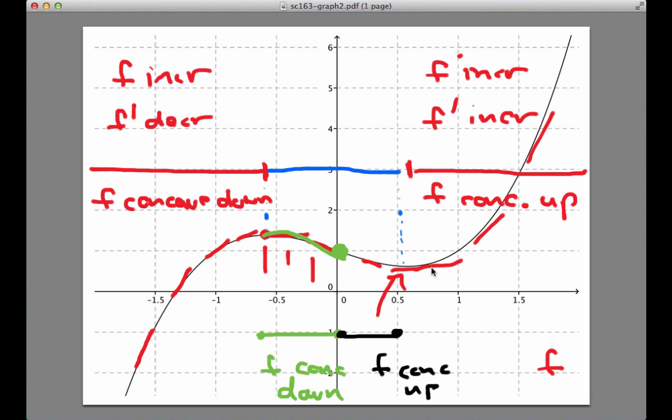So to put this together, the function is concave down. Actually, I'll put this in black here, from here all the way to here. And concave up all the way from here to the other edge. So concave down over here, concave up over here. But it's got this interesting mix of concave up and concave down with increasing and decreasing. Thanks for watching.